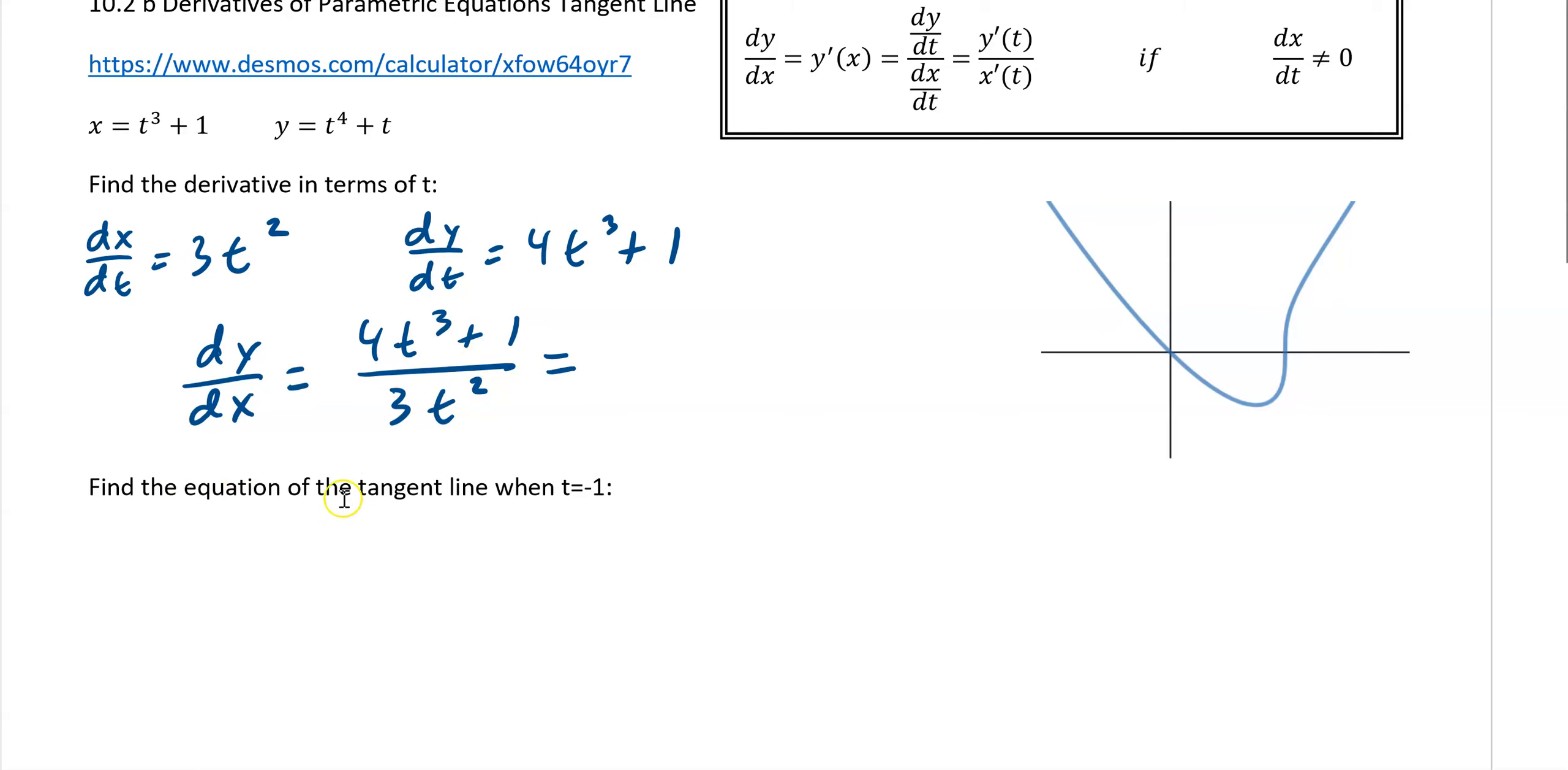All right, and then we can do some simplifying, but we're just going to be plugging in negative 1. So dy/dx is just plugging the negative 1 in. Now you could also just plug them in individually. So you could plug negative 1 in here to find out what your denominator is and plug negative 1 into dy/dt to find out what the numerator is. But we end up with negative 3 over 3, which is negative 1. So that is the slope of our tangent.